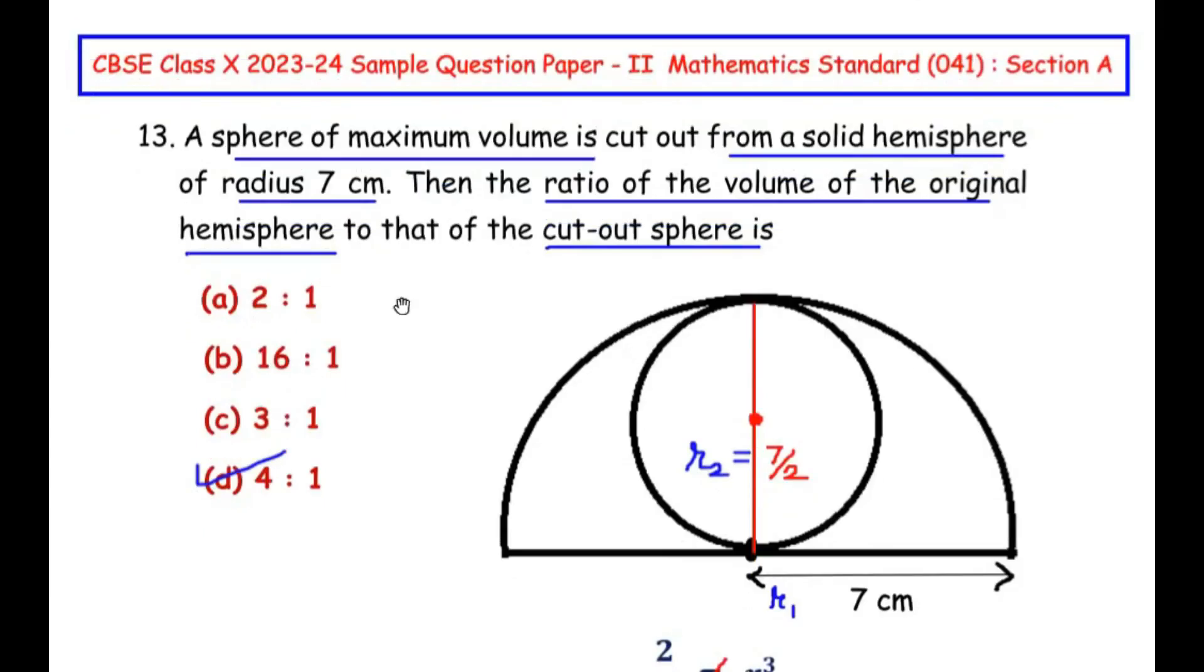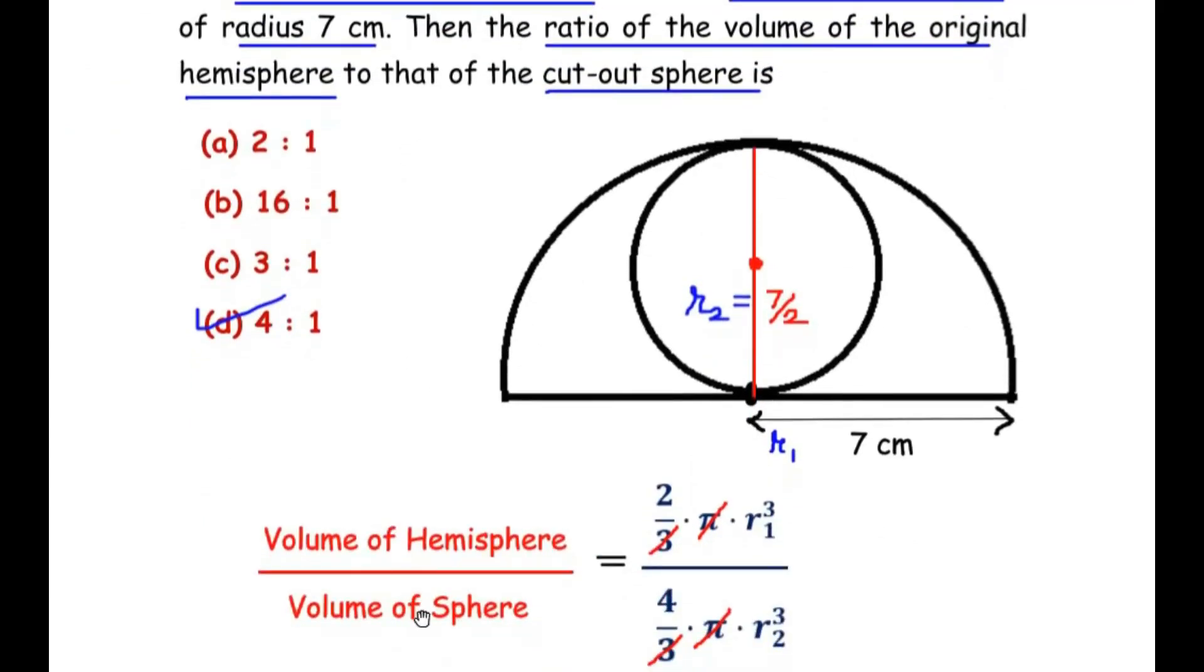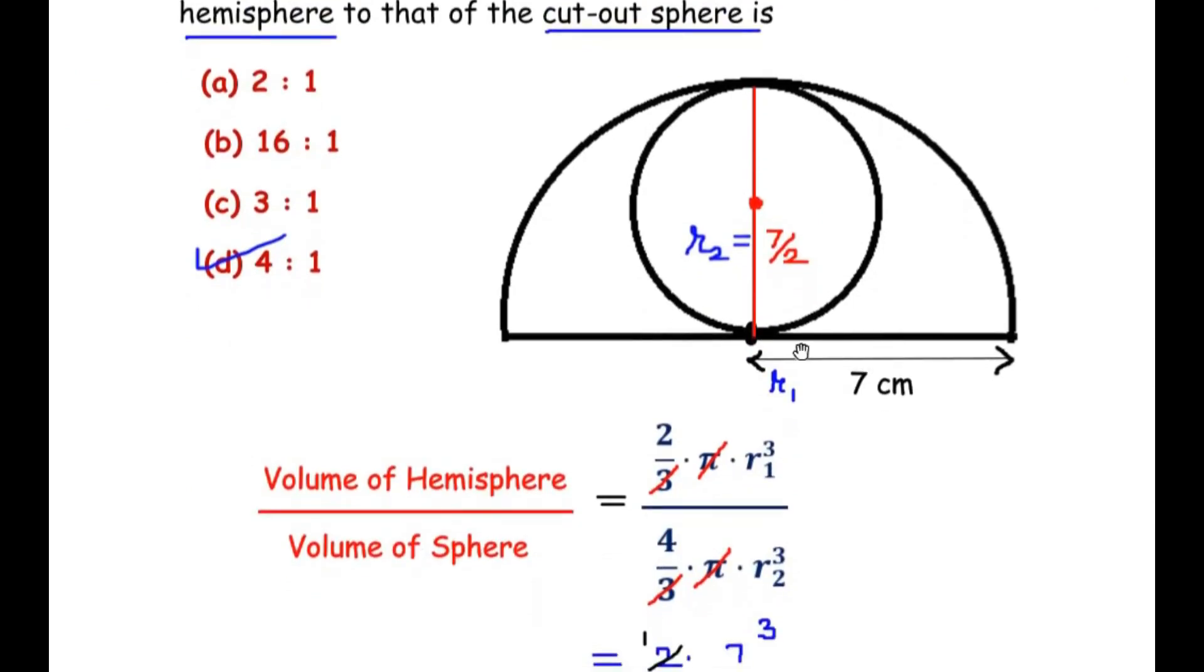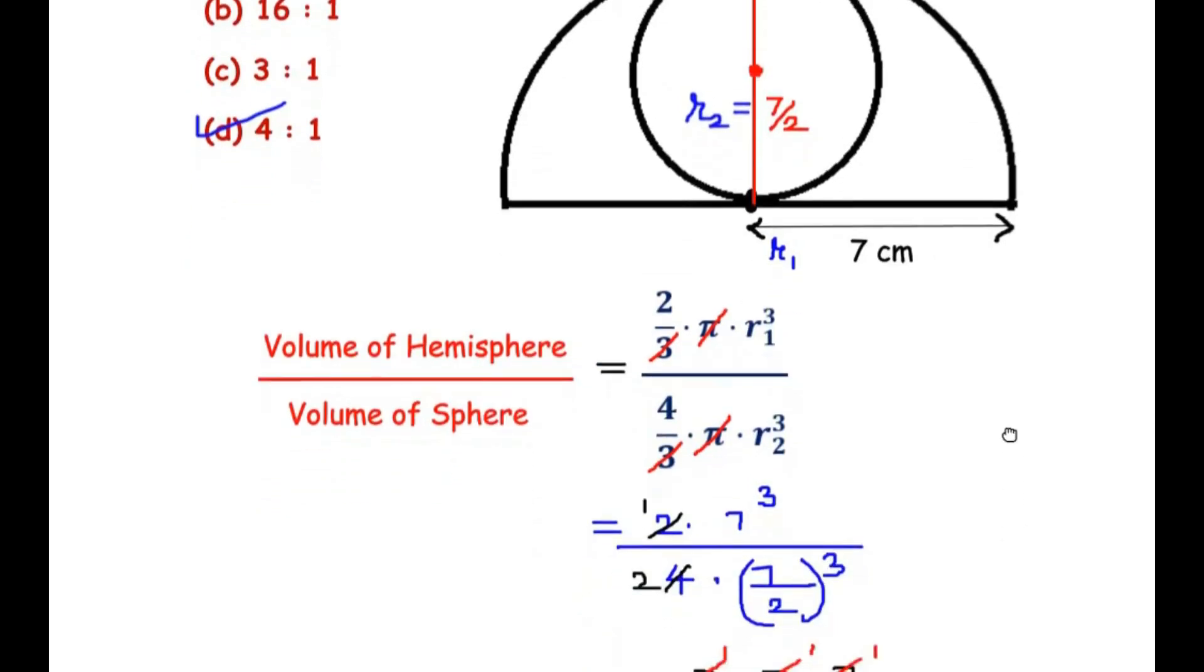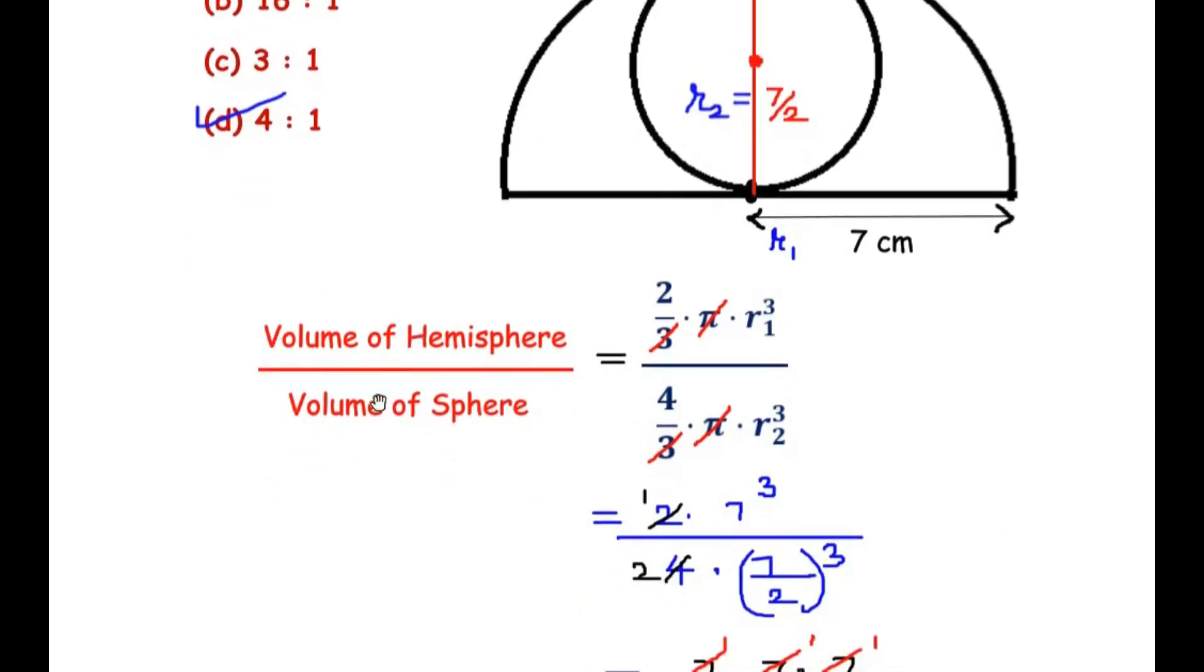So here we have used the formula for volume of the hemisphere and volume of the sphere, and by finding the radius of each, we solved it to get the ratio of volume of hemisphere to volume of sphere as 4:1.